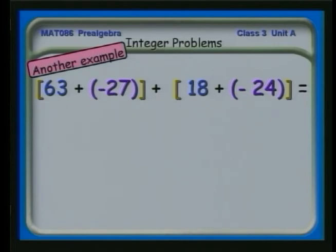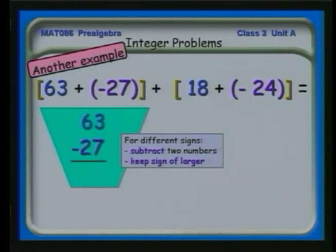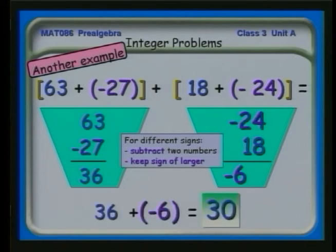This example is a bit more complex because we have brackets: 63 plus minus 27, added to the quantity 18 plus minus 24. We do two separate problems. For 63 plus minus 27, different signs so subtract: 63 minus 27 equals 36, keeping the sign of the larger number. For 18 plus minus 24, subtract 18 from 24 and keep the sign of the larger, getting minus 6. Then adding 36 and minus 6 together gives a final answer of 30.